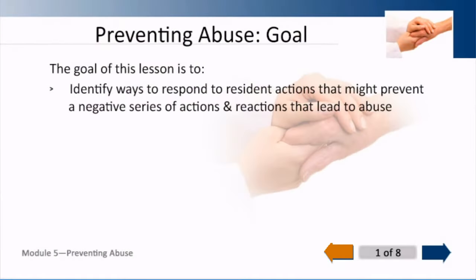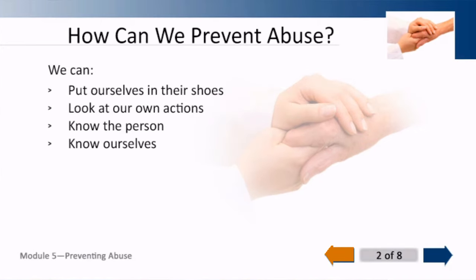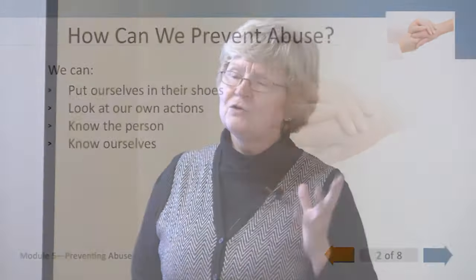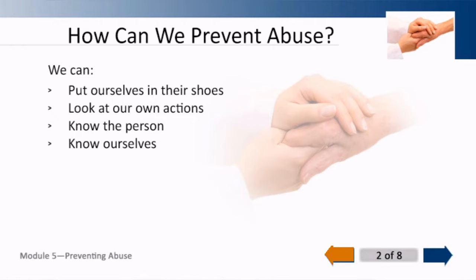The goal of this lesson is to identify ways to respond to resident actions that might prevent a negative series of actions and reactions that lead to abuse. We have to put ourselves in their shoes, we have to be their voice, and we have to look at our own actions. If someone develops a behavior, you need to do a root cause analysis on that behavior and see if it was something that you did that initiated it. Then you have to know her so well — know her, know you, and know what your reaction is going to be. One of the responses would be to try later.